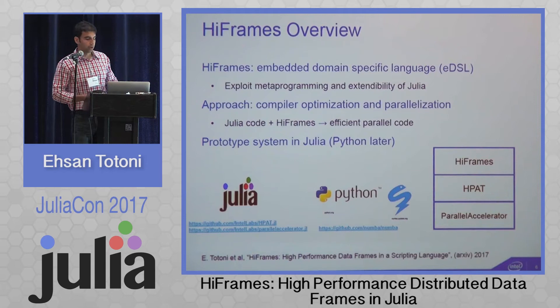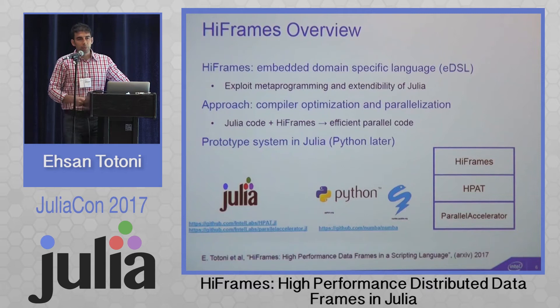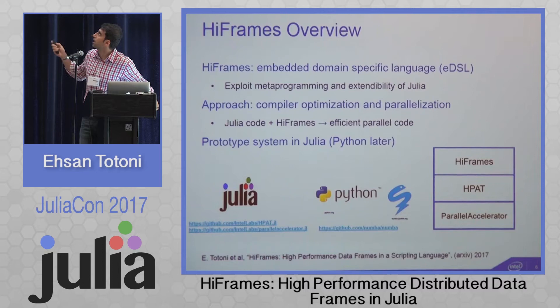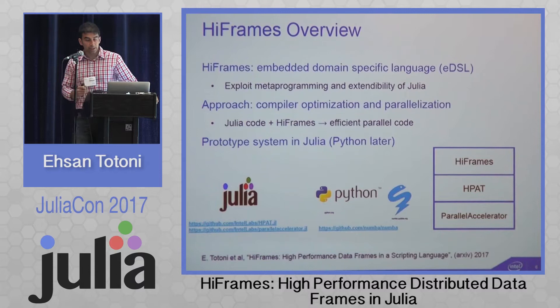We have a prototype system inside the HPAT package in Julia, and we plan to extract it to its own package later. We also plan to build a Python prototype using the Numba JIT compiler for comparison. All our systems are available online — parallel accelerator, HPAT, and everything else. We also have a paper on arXiv with more details of the HiFrames system and this new approach to data frames.